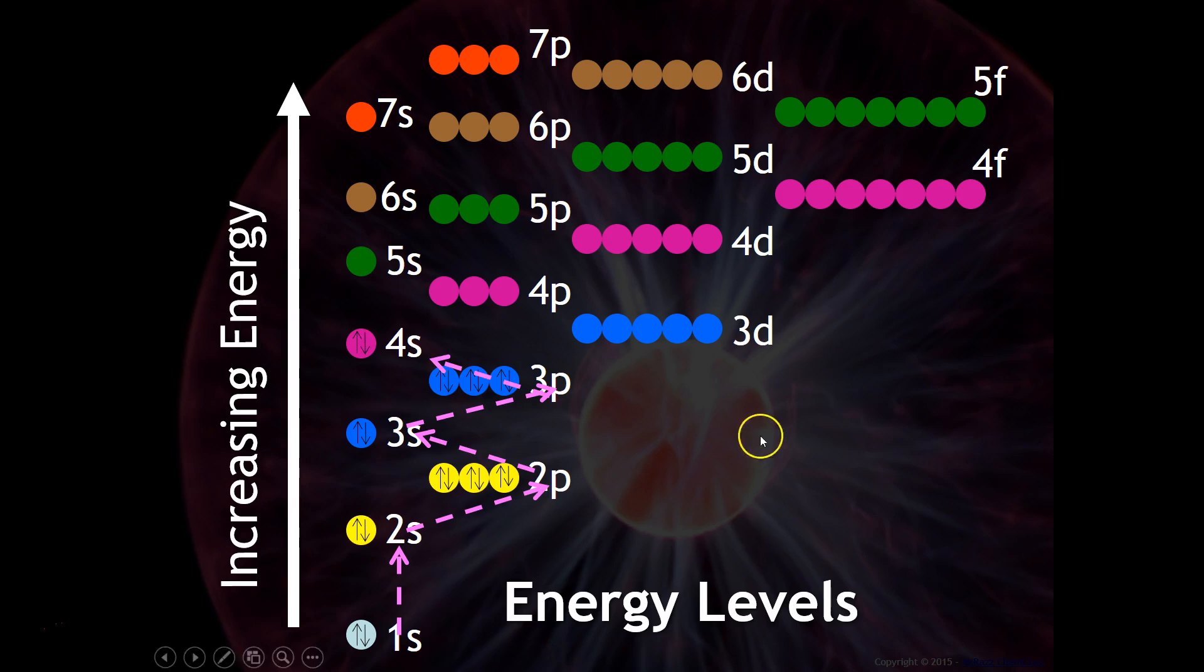You might expect to go from 3p to 3d. Well, in fact, you saw that it went to 4s. But again, 4s is still lower energy than 3d, and so that's why it's filling out of order.